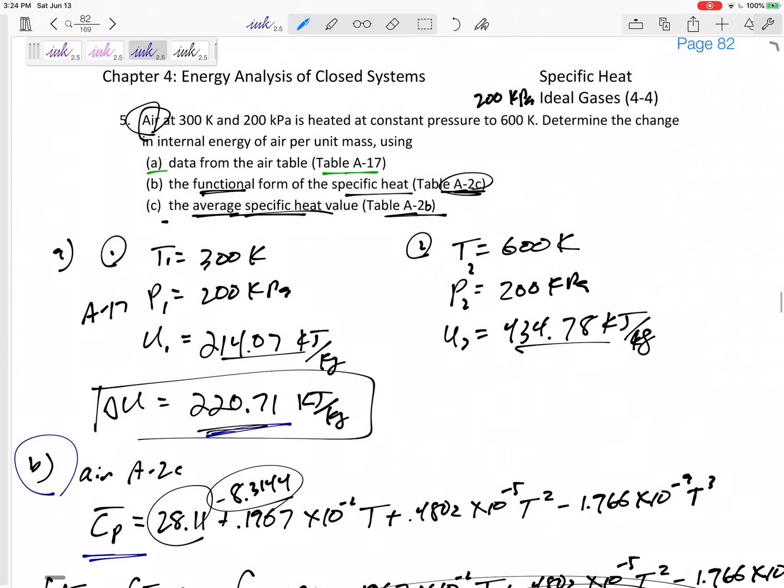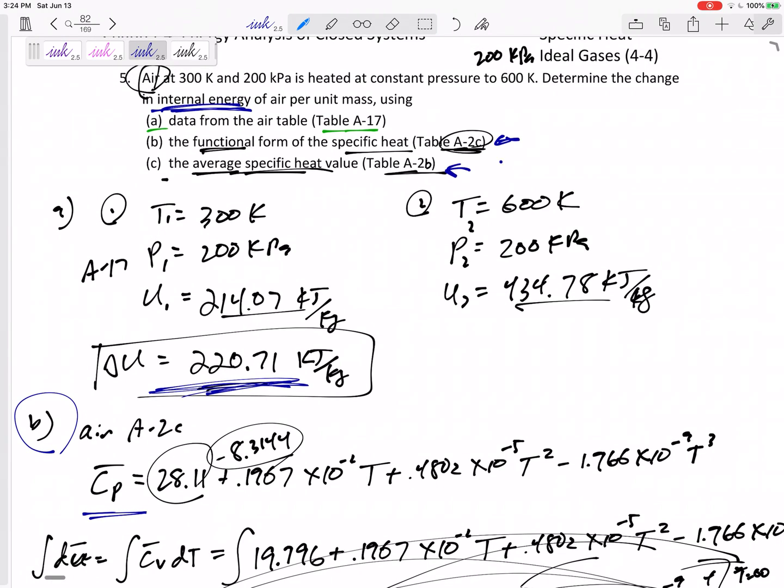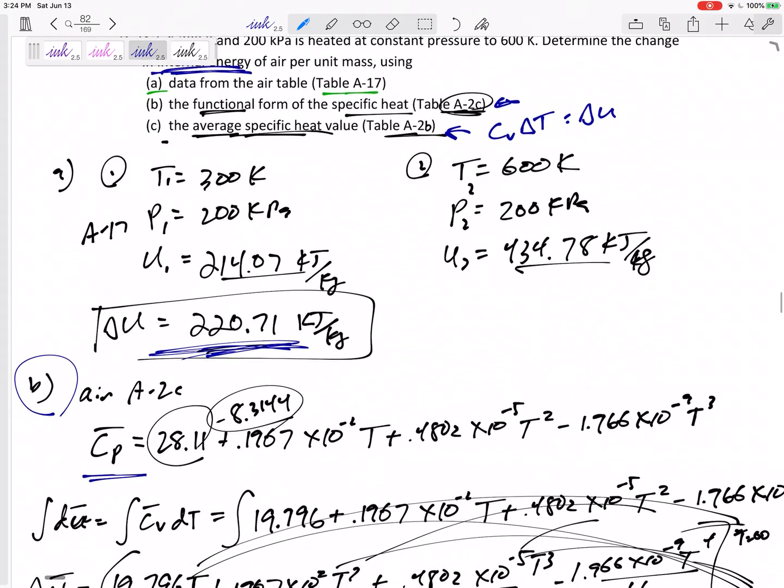If you want internal energy, you can look at property tables, you could look at the integral, or you could say CV delta T gives me change in U. CV delta T gives me change in U.